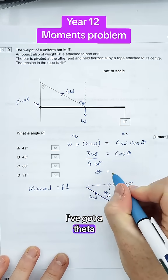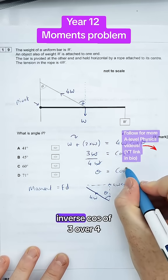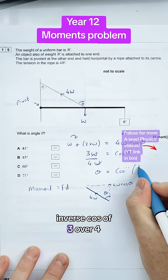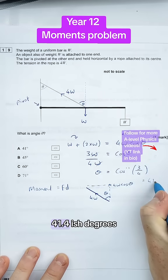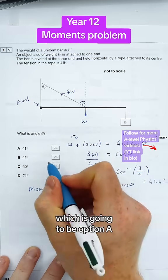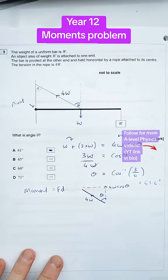So I've got theta is going to be equal to inverse cos of 3 over 4. And that happens to equal about 41.4 degrees, which is going to be option A for this question.